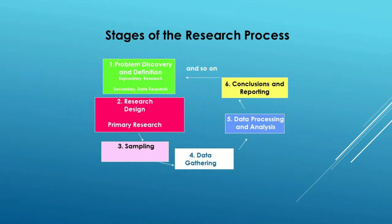And from there, we went out and we did secondary research to give some sort of a background on exactly what the topic is about. Once we've got our secondary research done, we need to be able to go and conduct some original research. This original research is known as primary research.